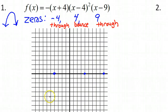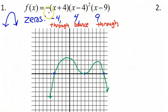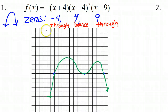So the graph might look something like this. It's got to go through the first zero, then I've got to curve back around and come back down in time to bounce off the second zero, then curve back around and come back down in time to go through the third zero and keep going. Notice the end behavior — even degree means both ends point the same direction, and with a negative leading coefficient both have to be pointing down. I have the correct end behavior, the correct x-intercepts at negative four, four, and nine, and the correct behavior: through, bounce, through.